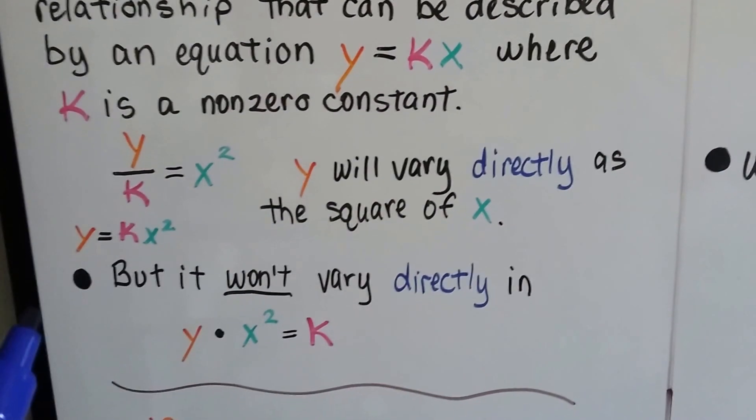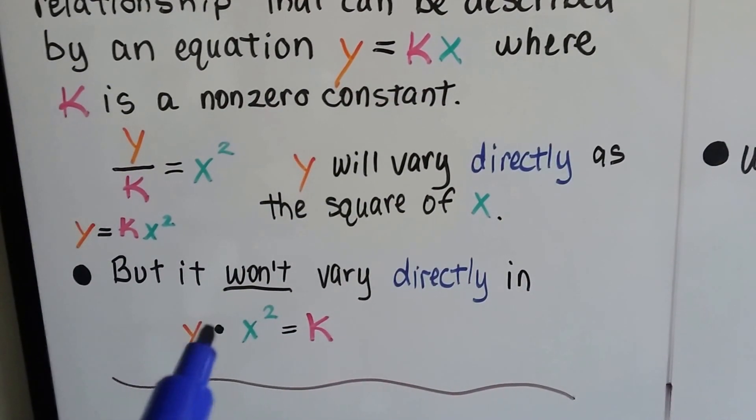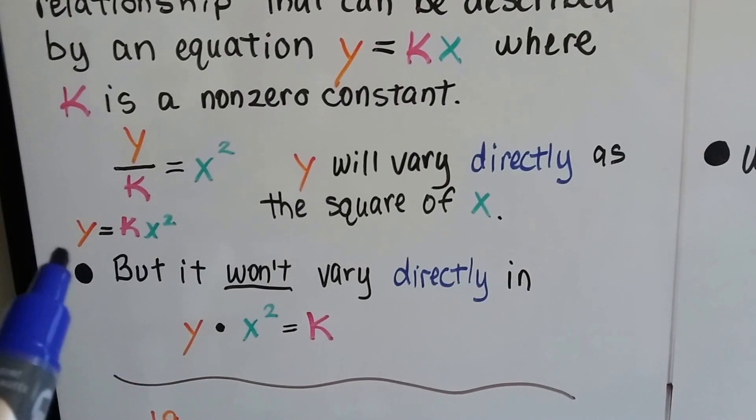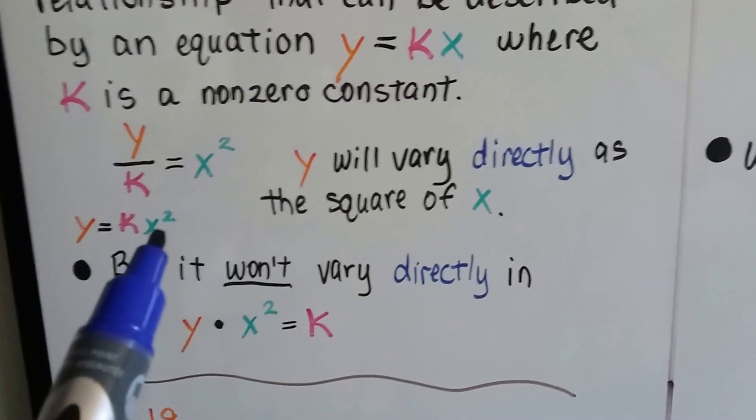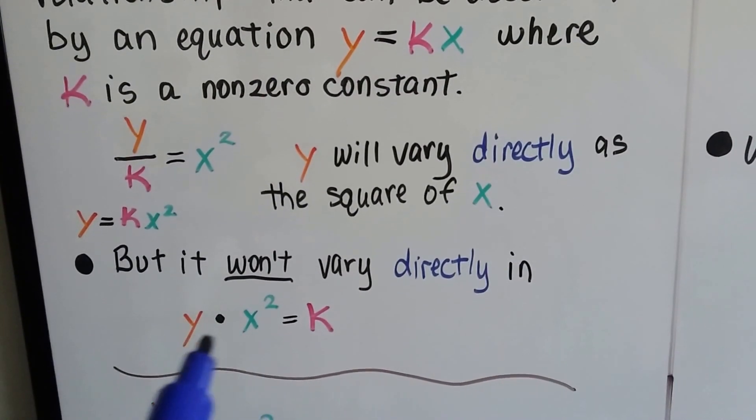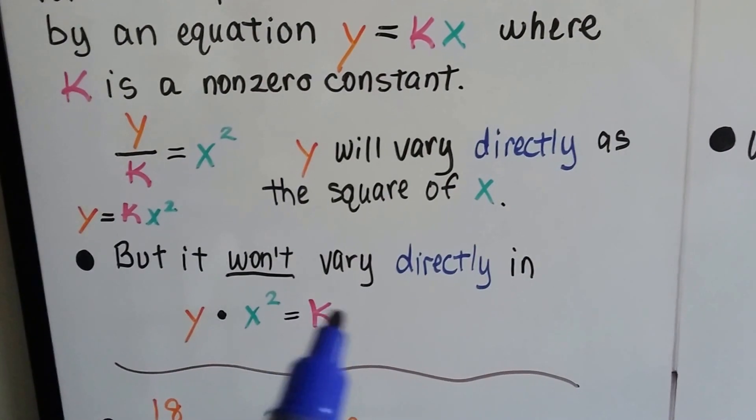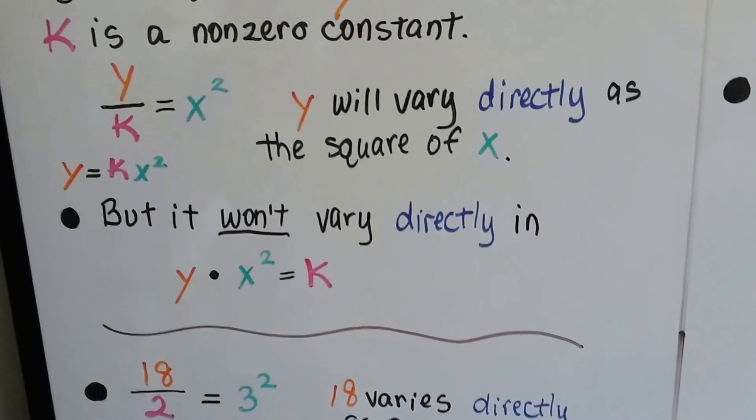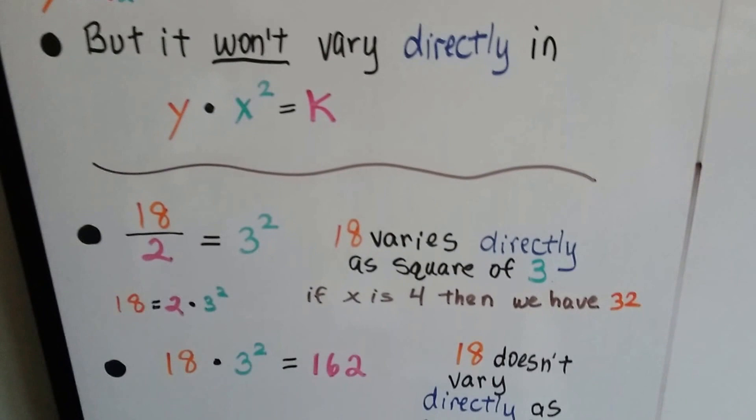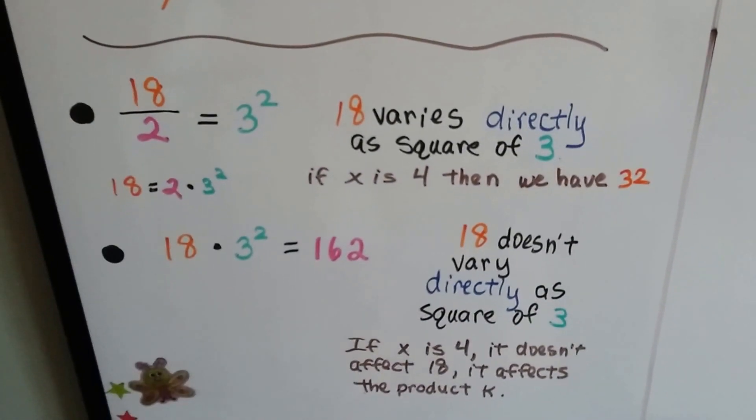But it won't vary directly if we do y times x squared equals k. See how we have y equals k times x squared? If we do y times x squared, it won't vary directly if we set it to equal k. So using real numbers, let's see what I'm talking about.